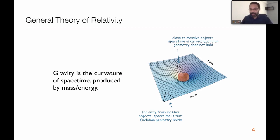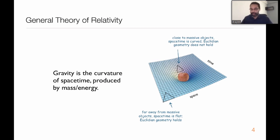As you approach the vicinity of a massive object or massive concentrations of energy, the usual axioms of Euclidean geometry will not be valid. For example, if you draw a triangle, the angles inside the triangle will not add up to 180 degrees. So one could actually do a local measurement to verify whether the prediction of GR is correct or not.